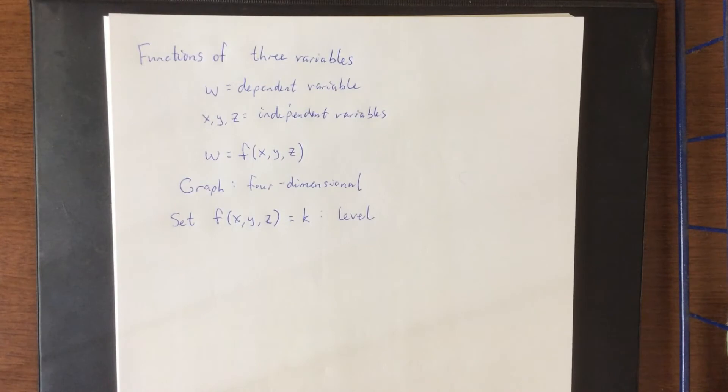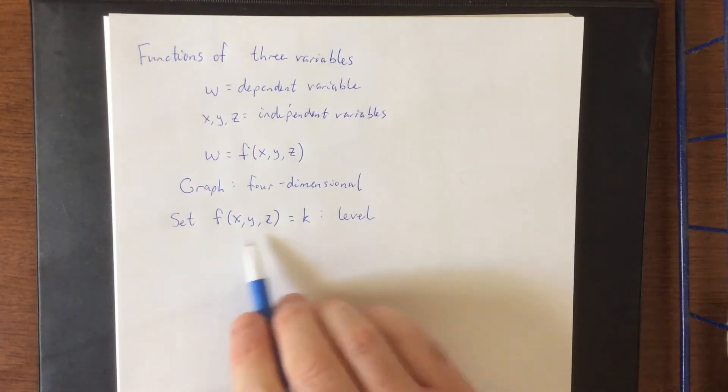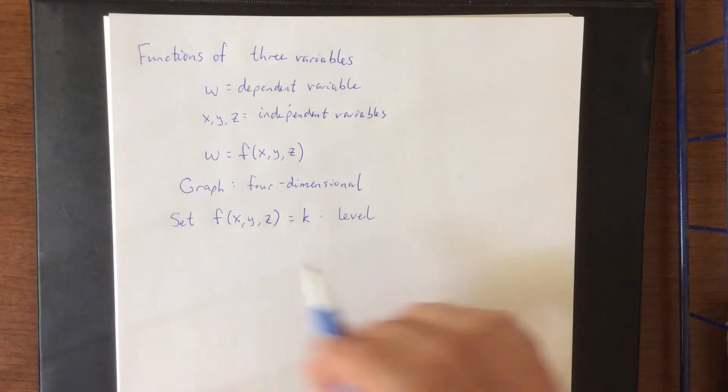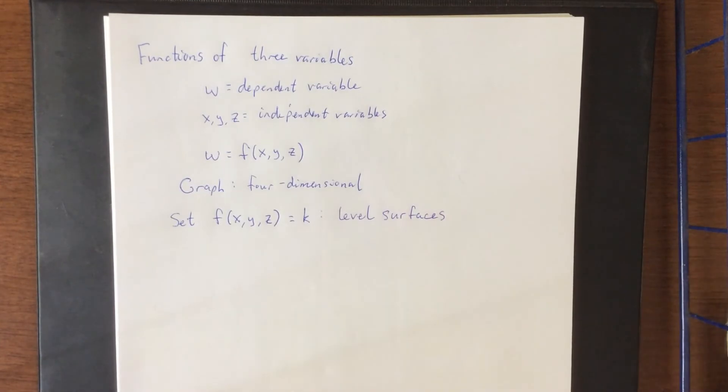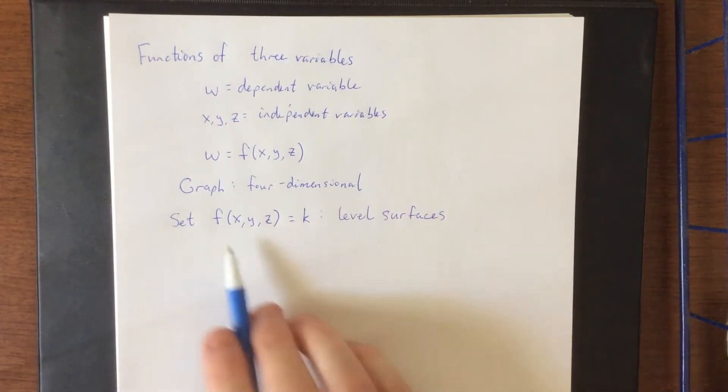However, this is going to be an object in three dimensions, and we'll essentially be treating that as one variable being a function of the other two. Well, then we're right back down to level surfaces. So a level surface is what you get when a function of three variables is equal to a constant.